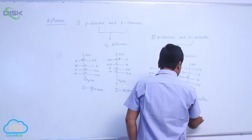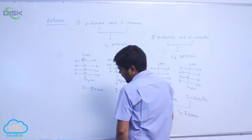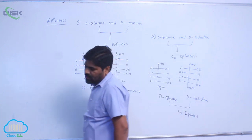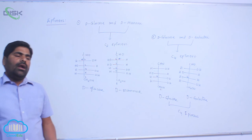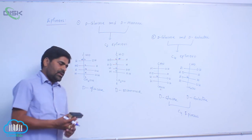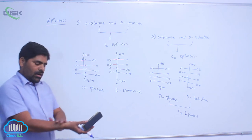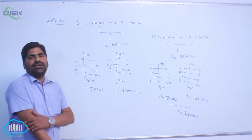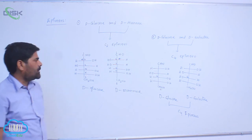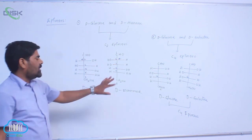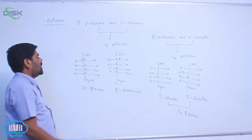So epimers are sugars that differ in the hydroxyl position of any chiral center, except the C1 carbon.